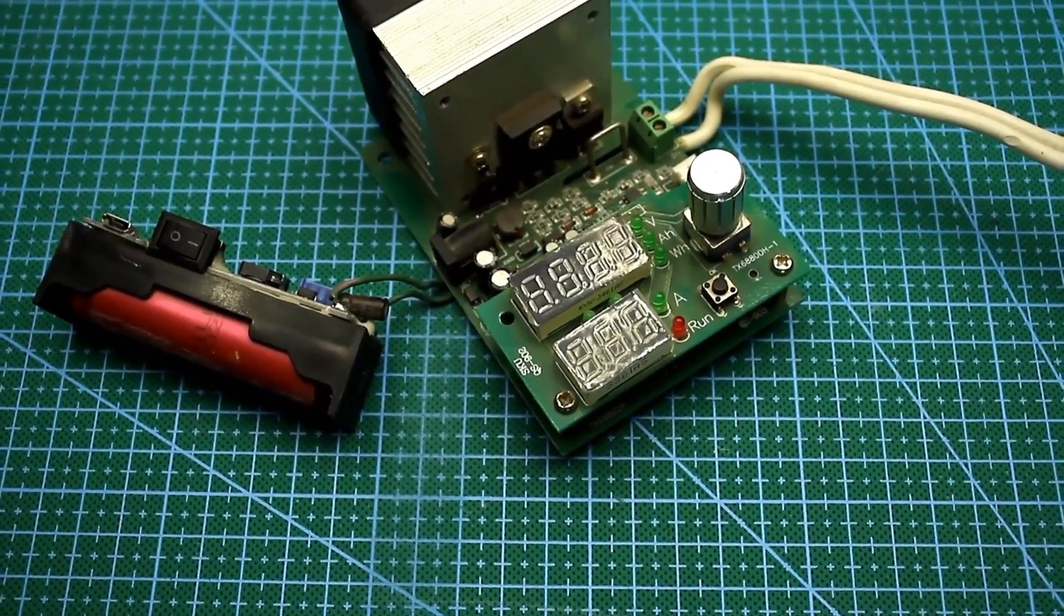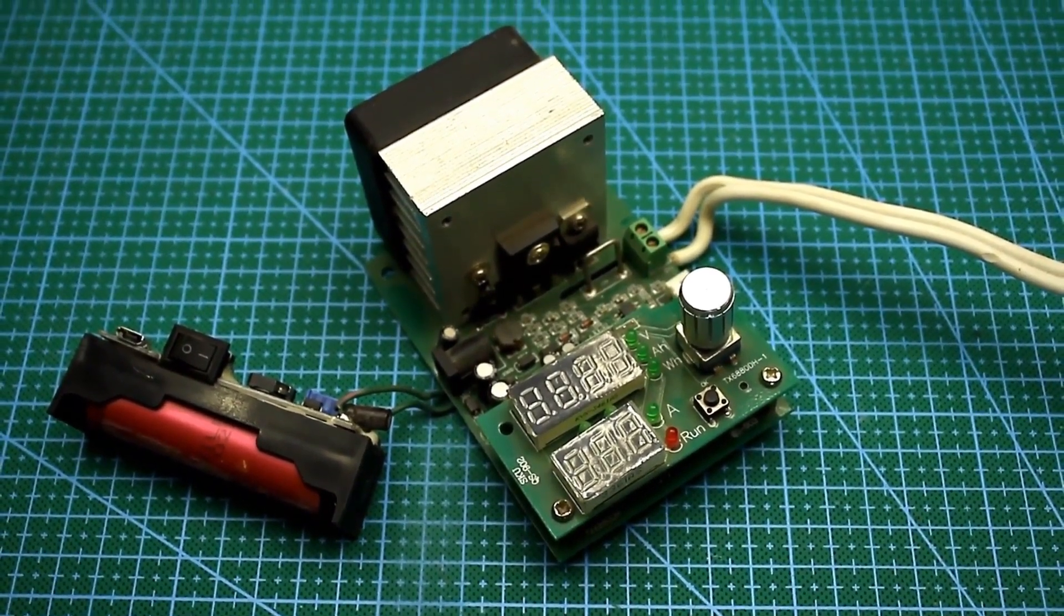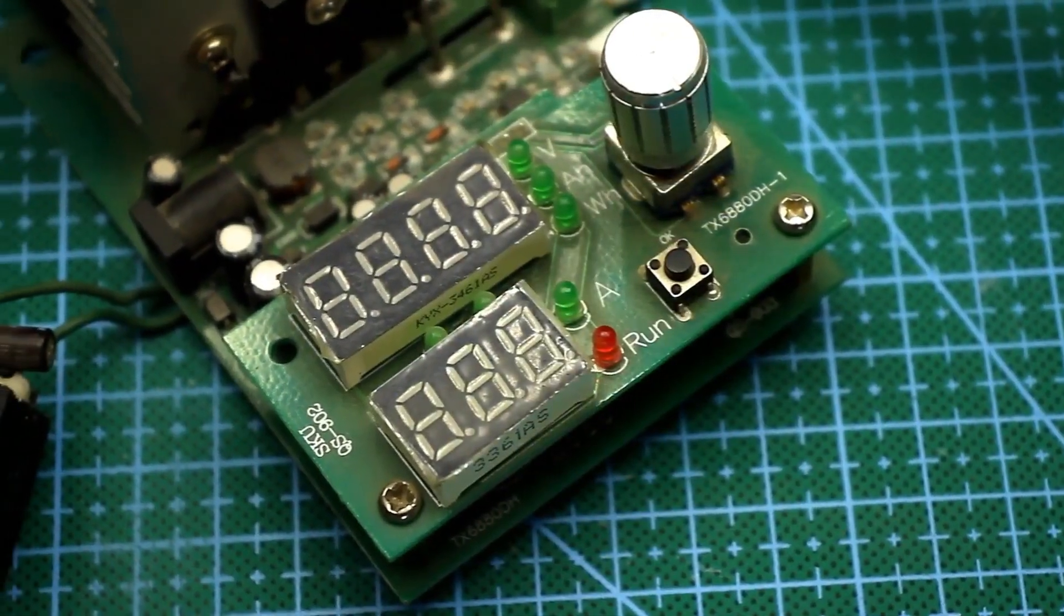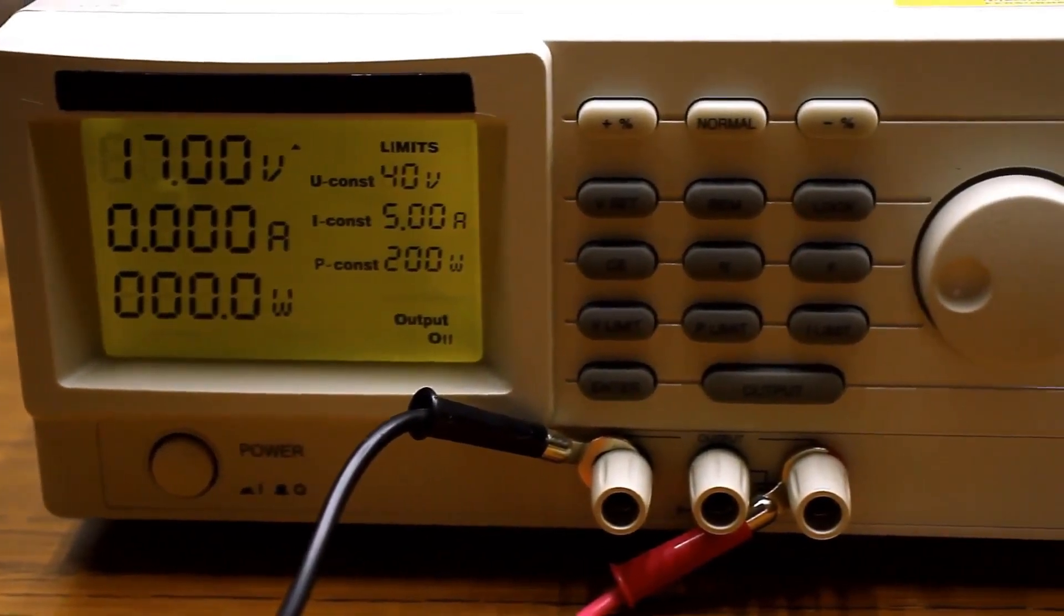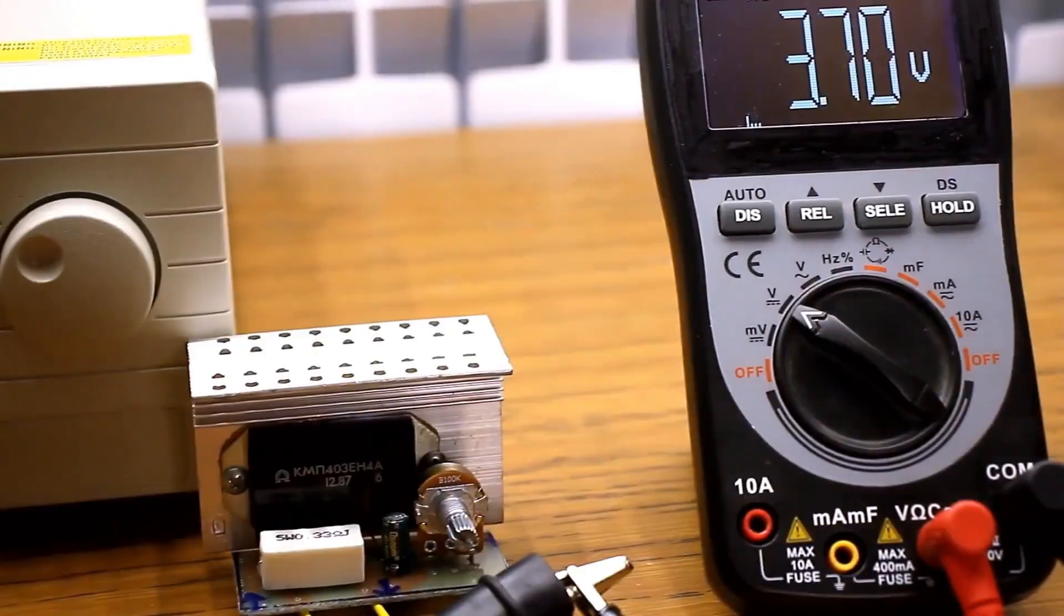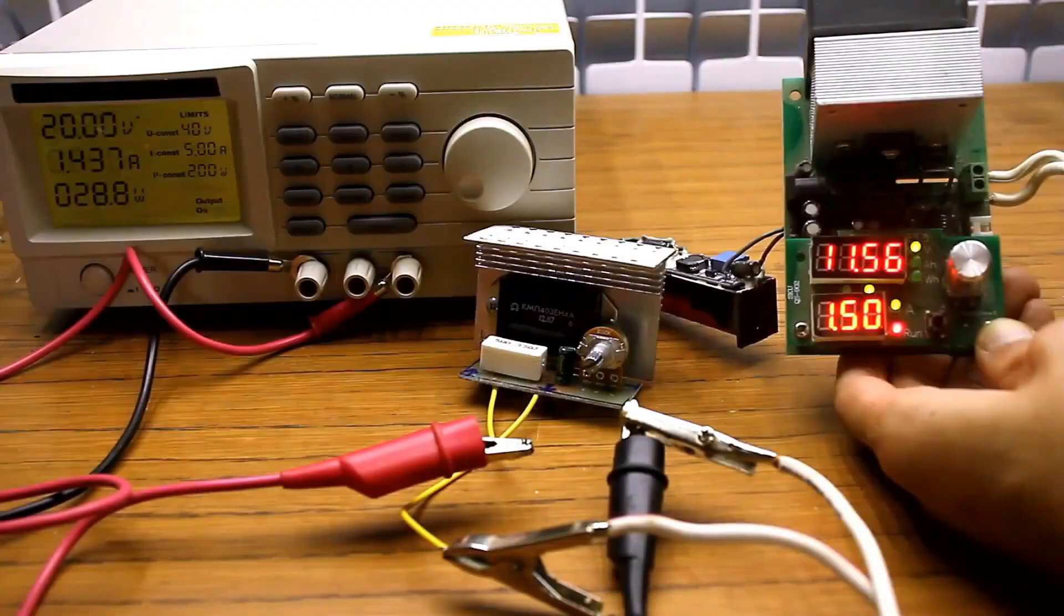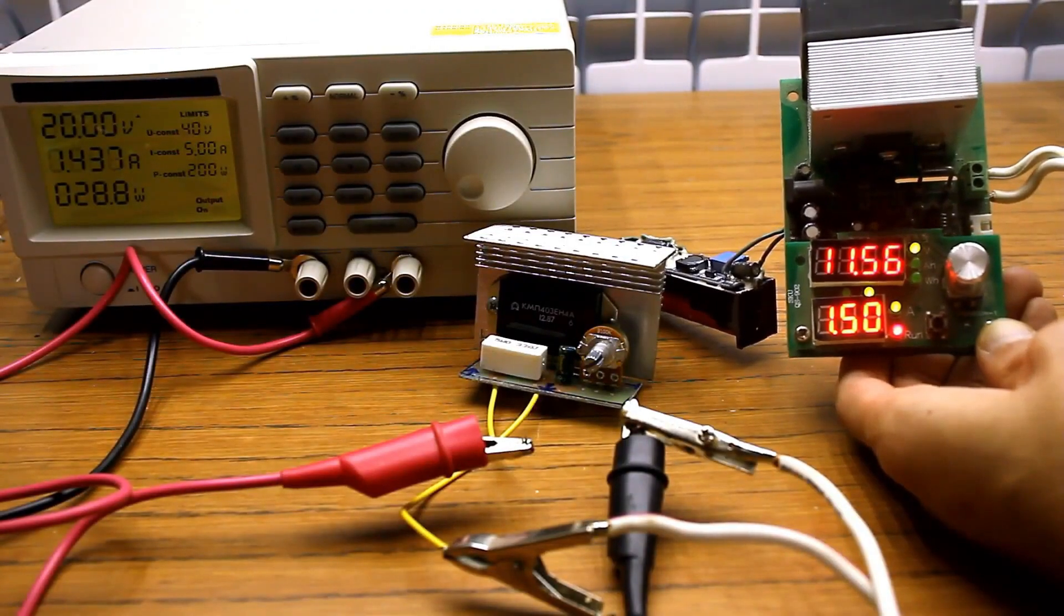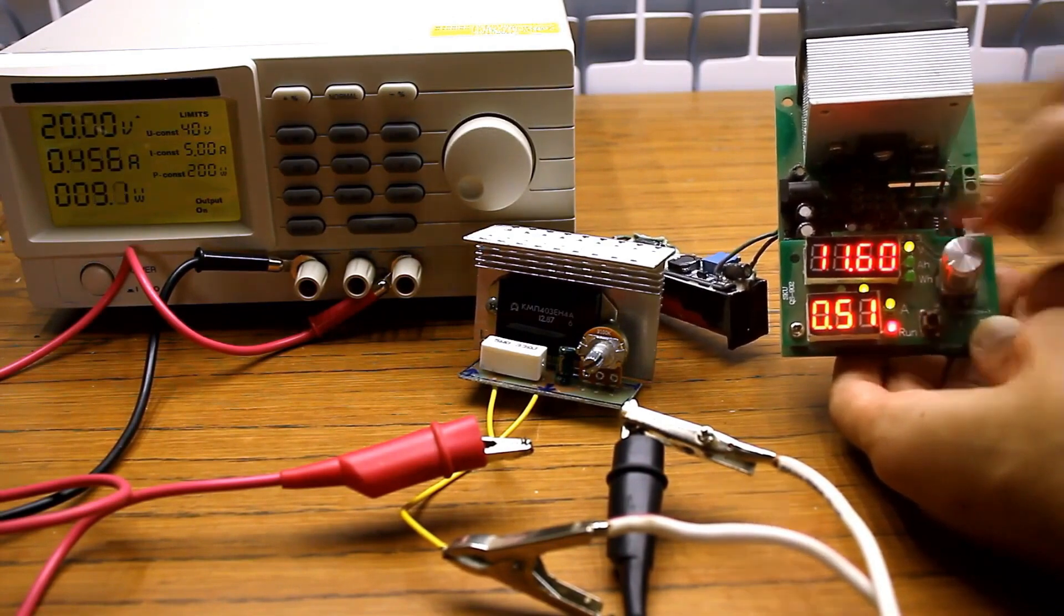The output of the microchip we will load it with an electronic load. The lower indicator on the load will show us the output current value, and the upper one, the output voltage. And the input parameters are visible on the display of the laboratory power supply. By the way, during the measurements, there will be some inaccuracies due to instrument errors and losses.